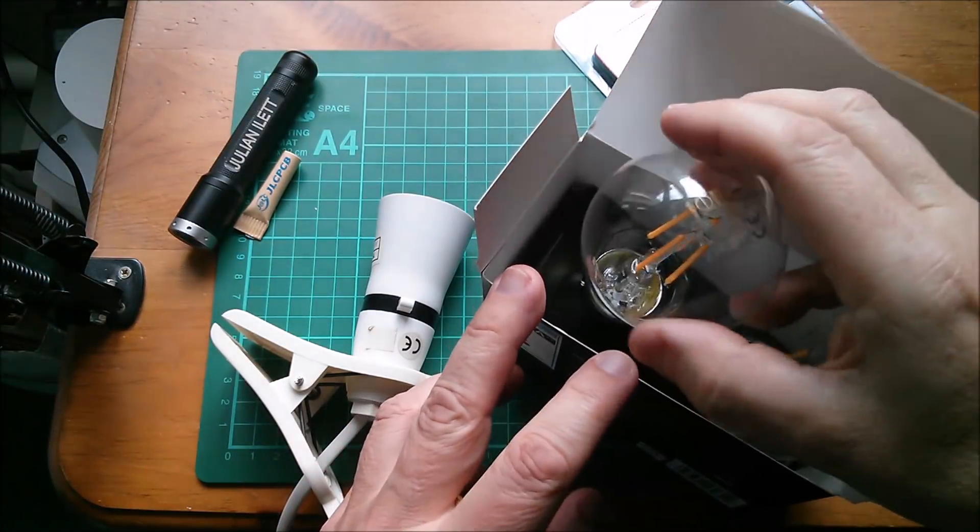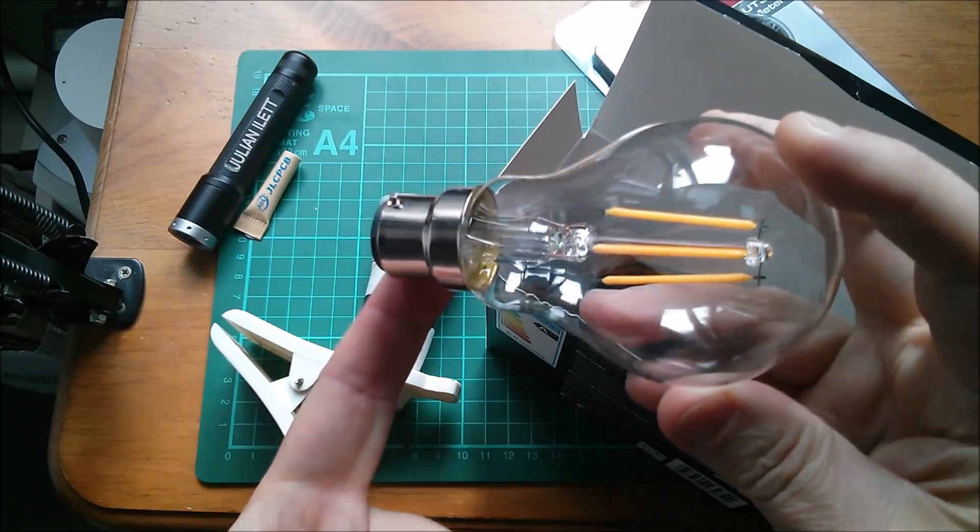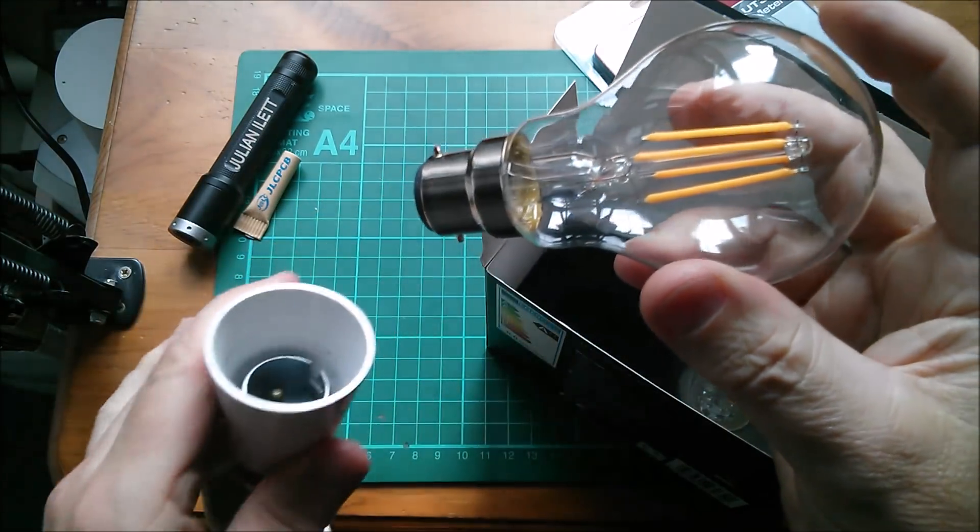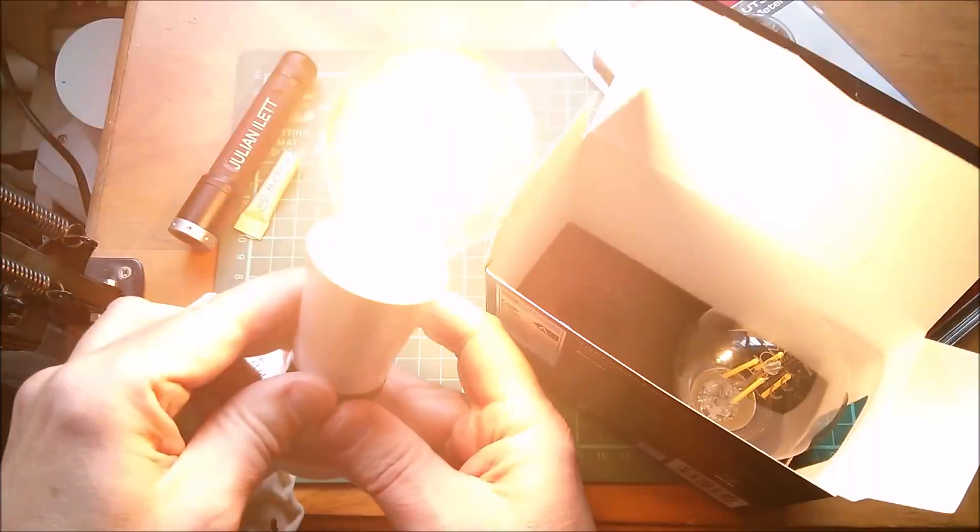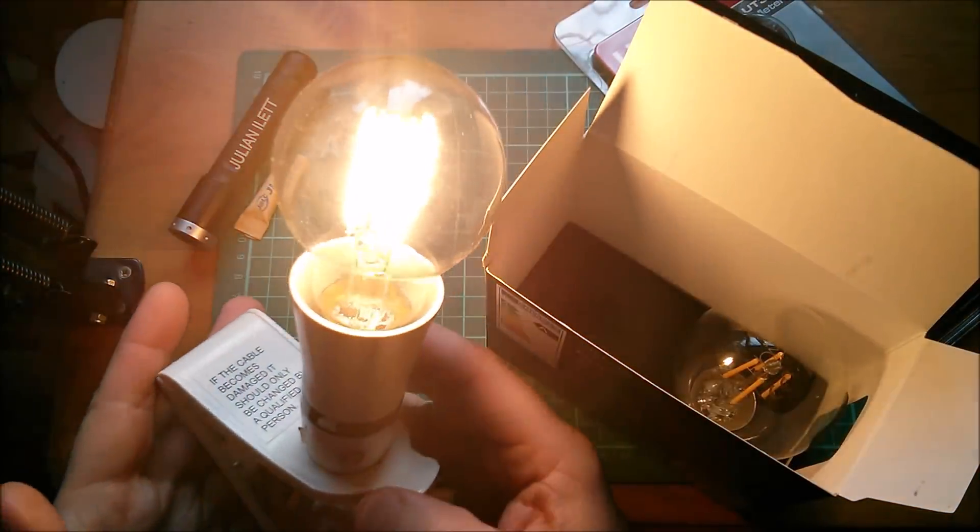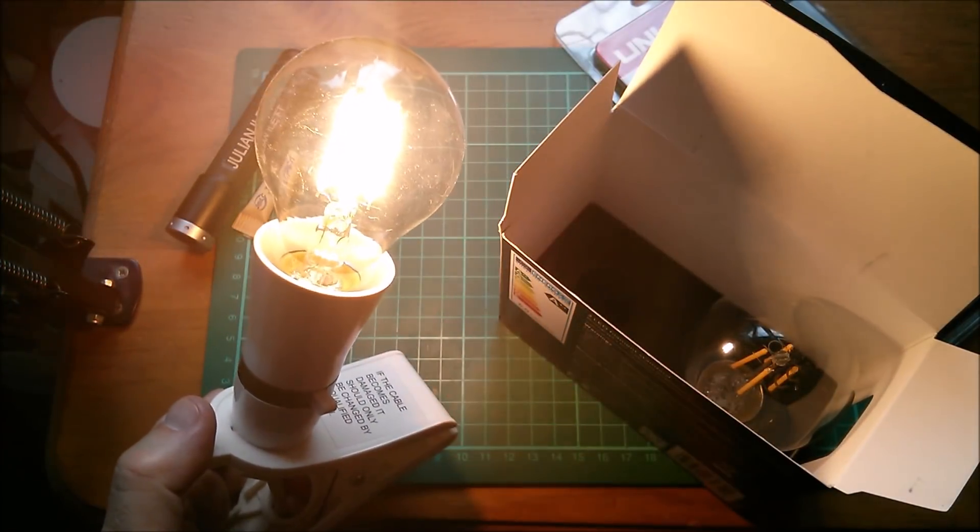Right, let's take one of these bulbs. They're Bayonet BC22, I think that's called, isn't it? Bayonet cap 22 millimeters. Let's put it in the socket and switch on. And yeah that looks pretty nice. It's an LED filament light bulb.